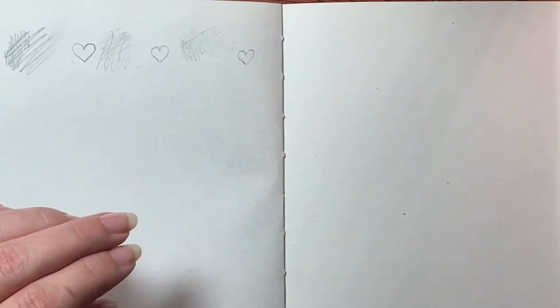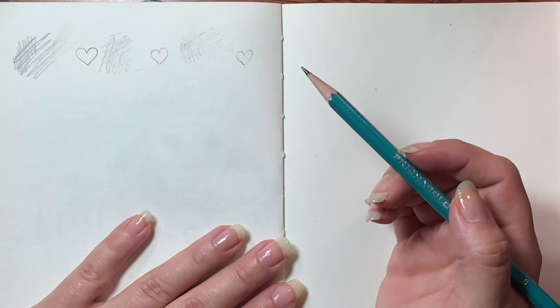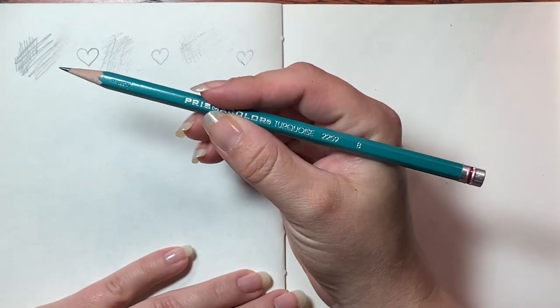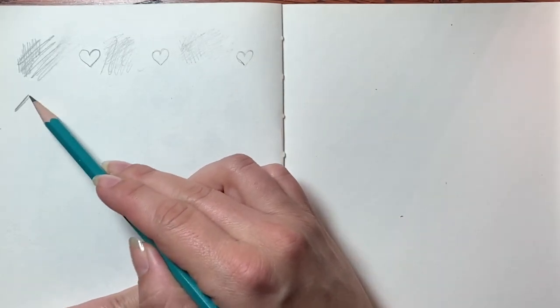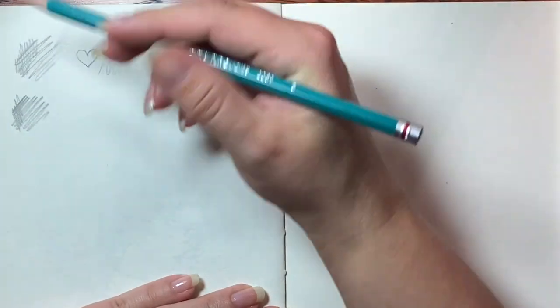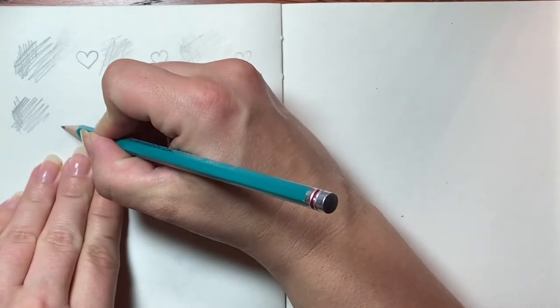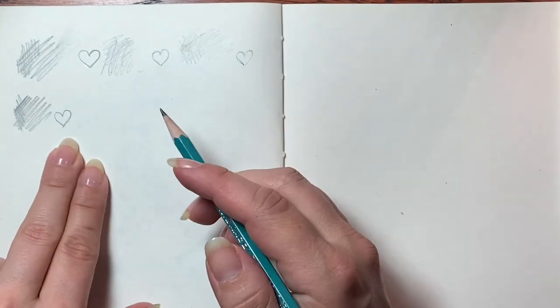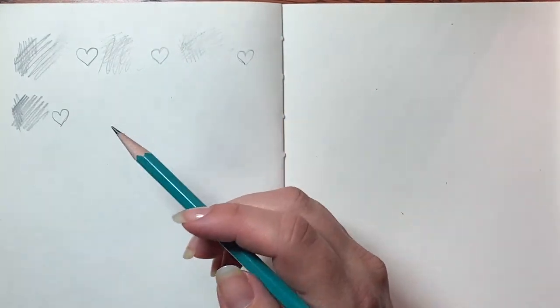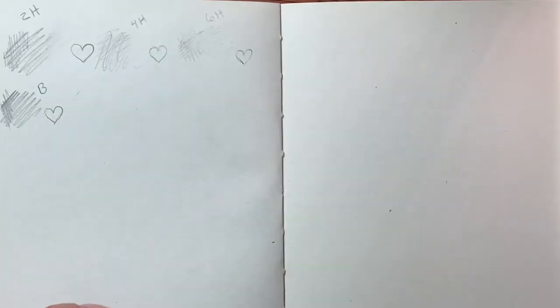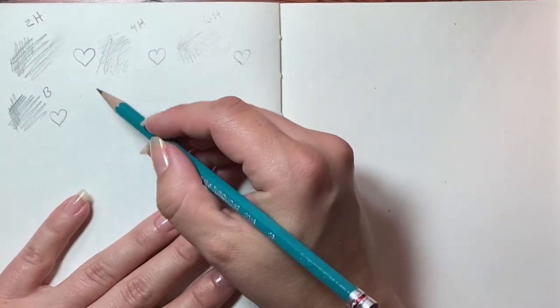So these are going to be the softer pencils and I think probably the darker pencils so this is your B. There we go. And the lead is going on a little bit smoother a little bit more creamy here than the H pencils did. And this one is 2B.